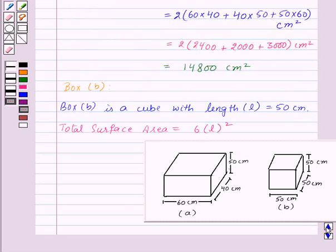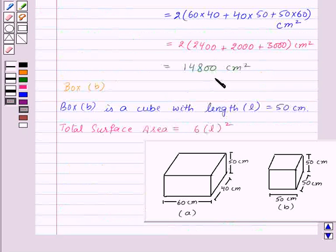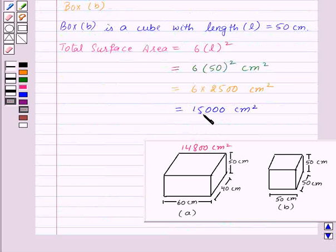Now we got that the total surface area of box A is 14,800 cm², and the total surface area of box B is 15,000 cm². That means box A has lesser surface area.